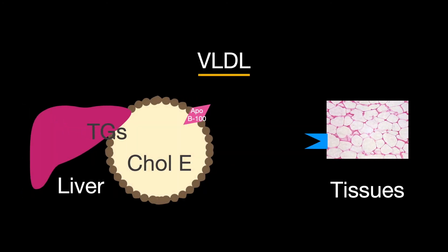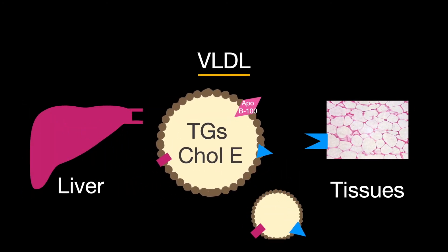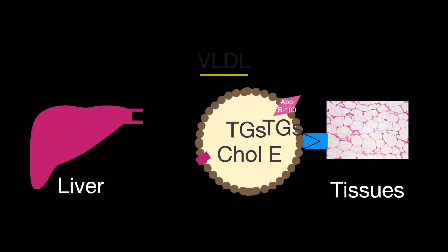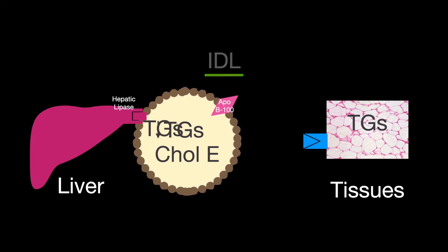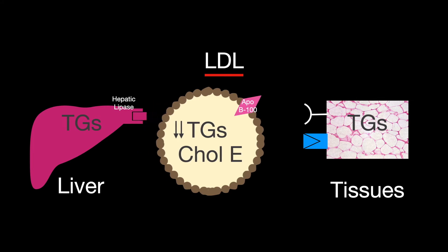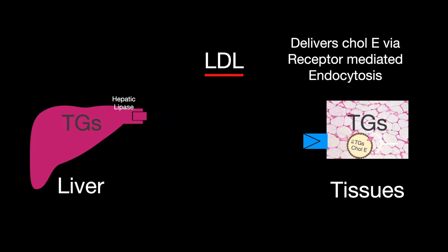Very low-density lipoproteins transport triglycerides from the liver to the tissues. Intermediate-density lipoproteins are the degraded very low-density lipoprotein that transports triglycerides and cholesterol to the liver. Liver modification by hepatic lipase creates low-density lipoproteins that transport cholesterol from the liver to the tissues, taken up by receptor-mediated endocytosis.